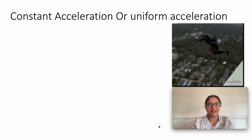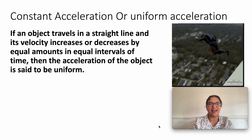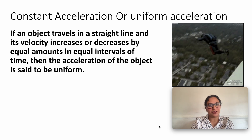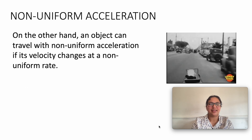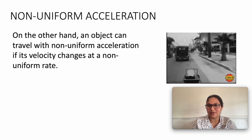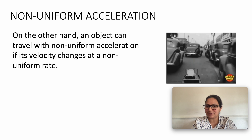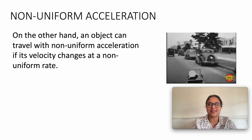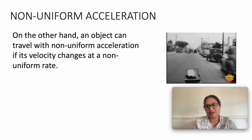What is uniform acceleration? If an object travels in a straight line and its velocity increases or decreases by equal amounts in equal intervals of time, then the acceleration is said to be uniform. The motion of a freely falling body is an example of uniformly accelerated motion. Non-uniform acceleration occurs when an object's velocity changes at a non-uniform rate — for example, a car traveling along a straight road that increases its speed by unequal amounts in equal intervals of time.